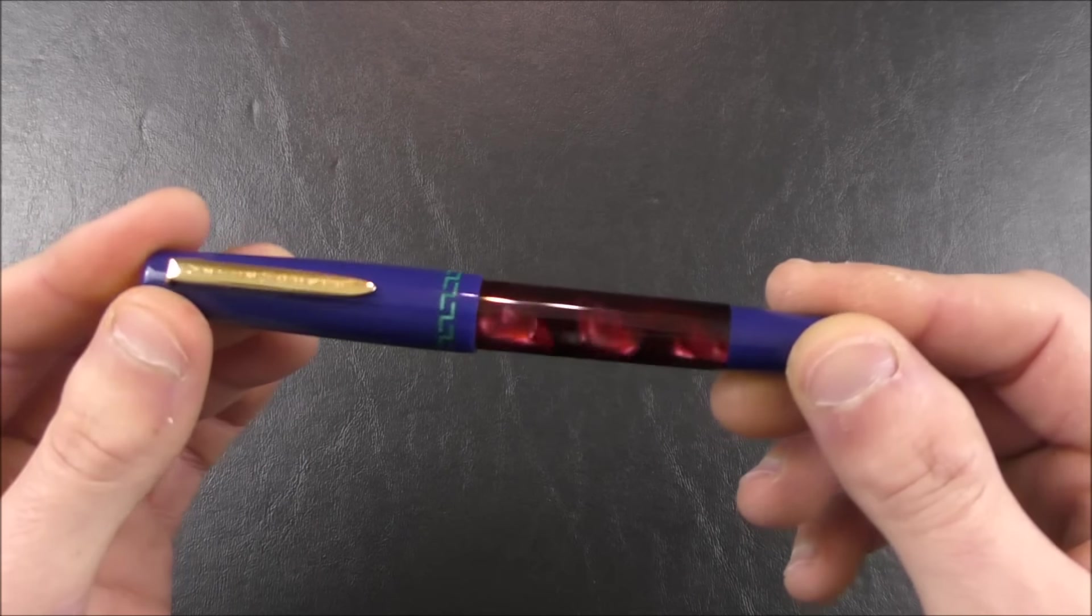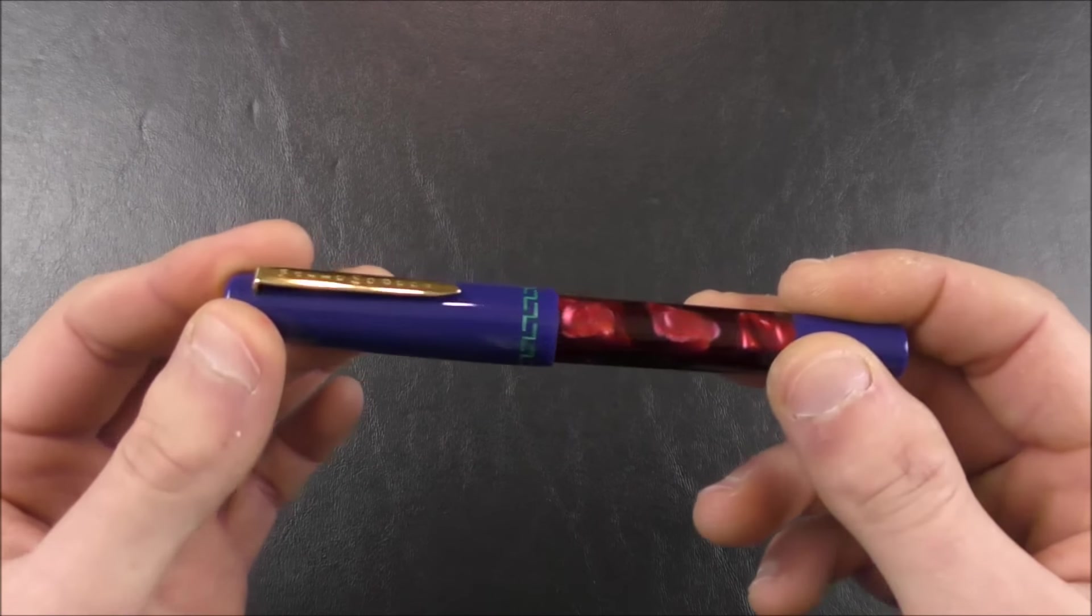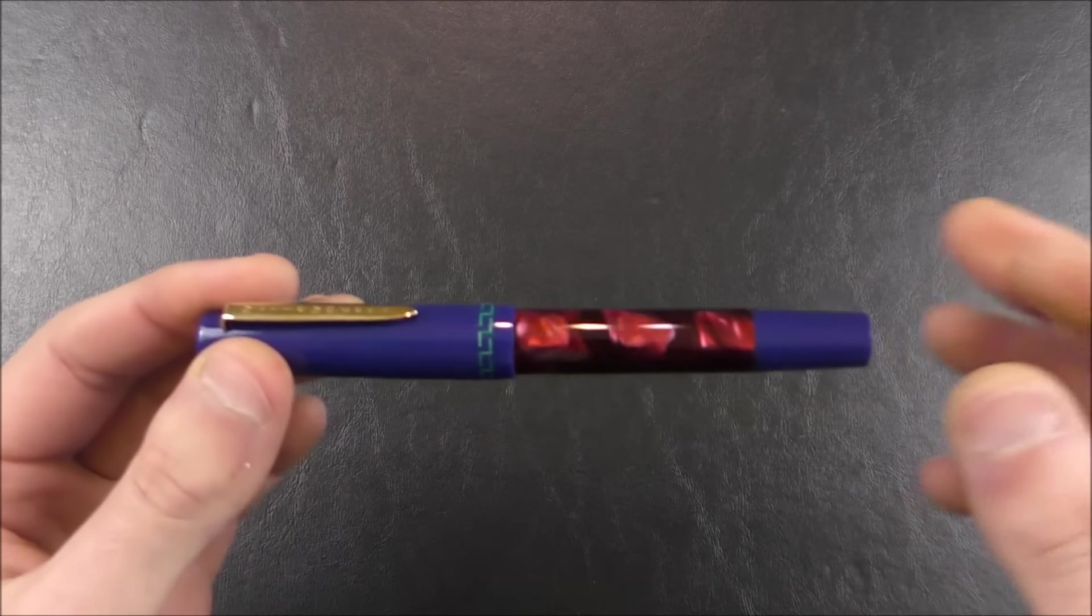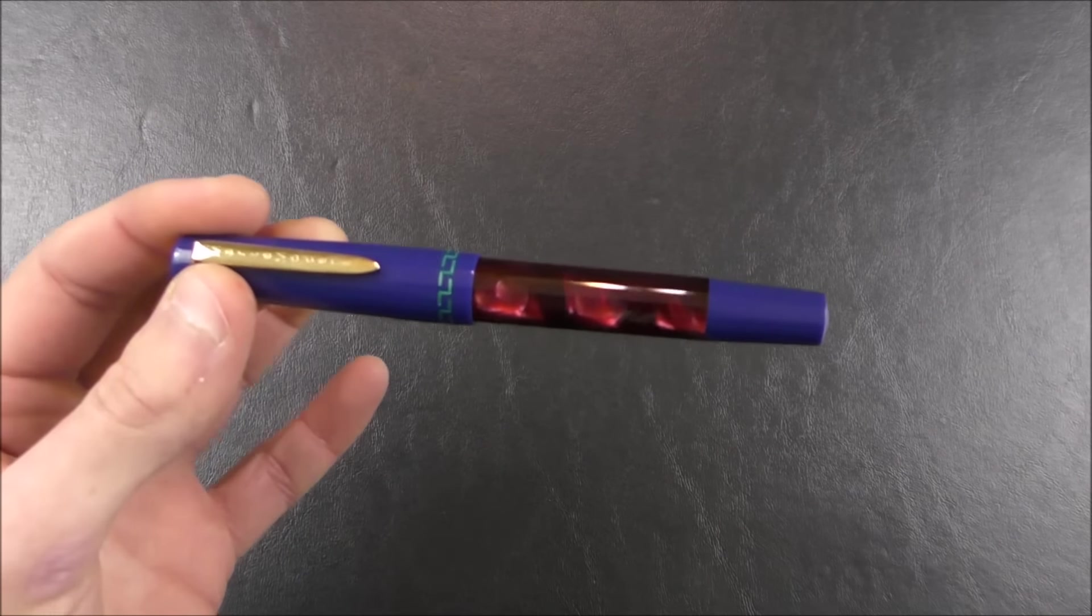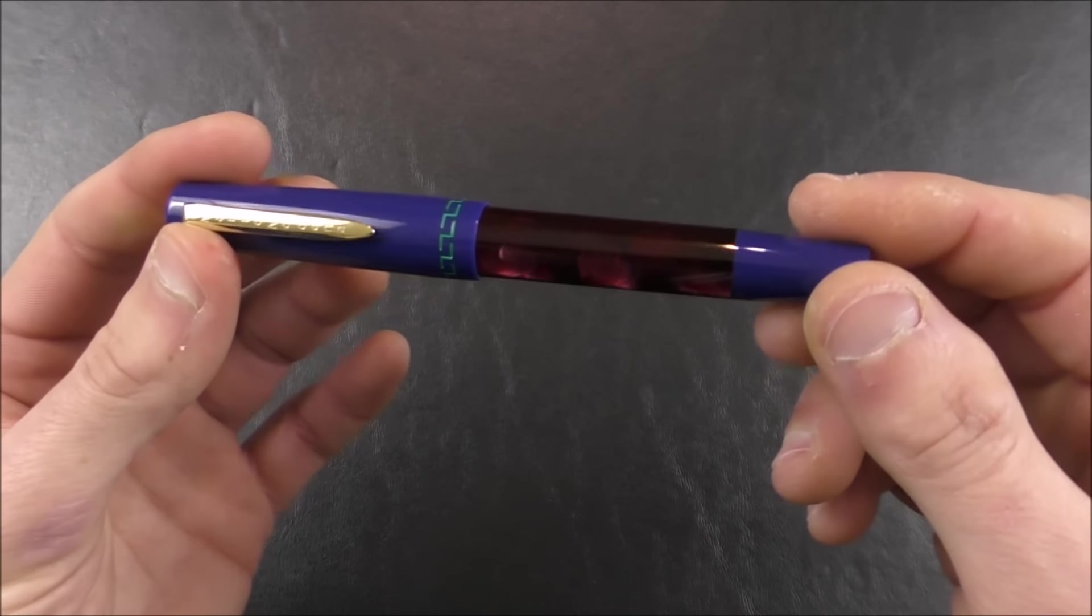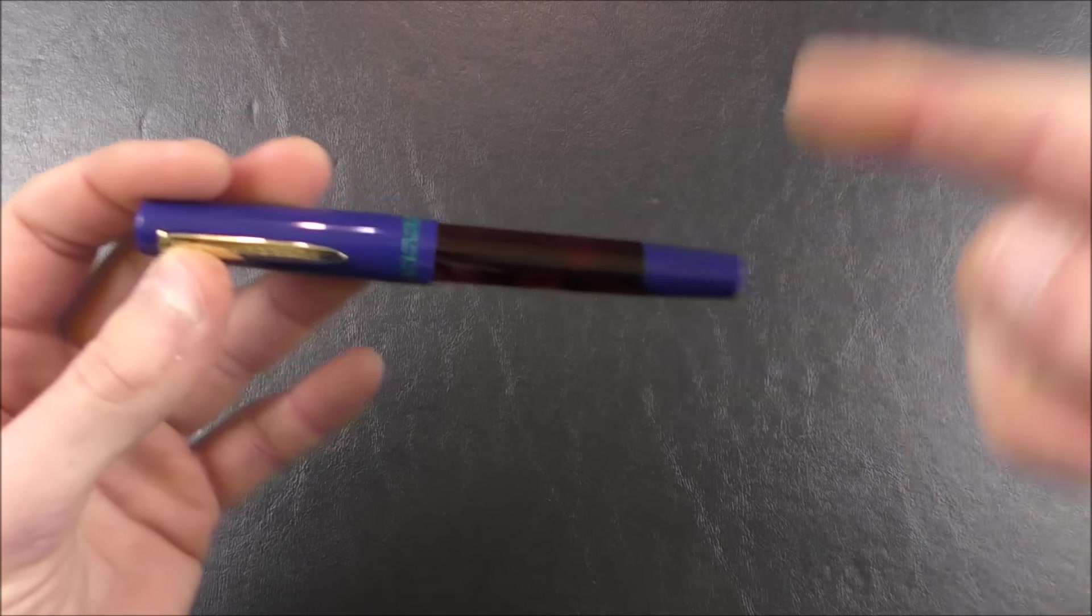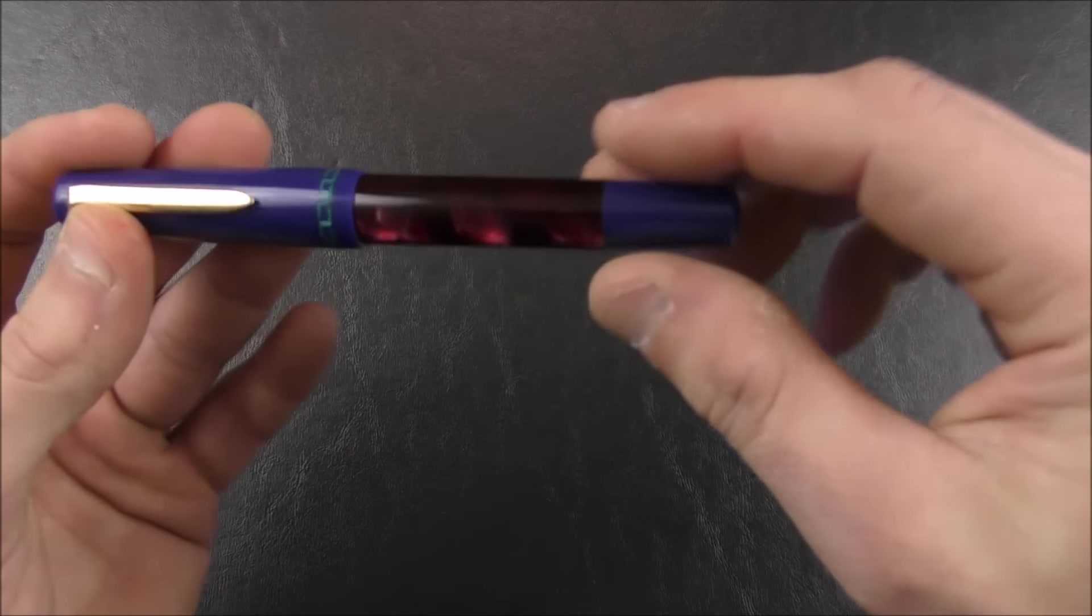It is made out of resin, so resin in fountain pen parlance is basically just another word for plastic, but it's not quite plastic. It's not extruded plastic. This is actually hand-turned from solid bars of resin, so you'd have a lathe, and you would turn the resin bar until you actually got the body of the pen.